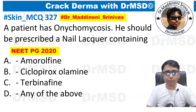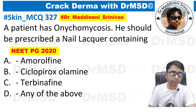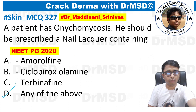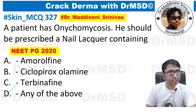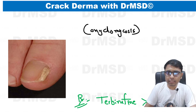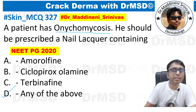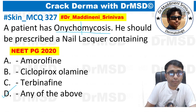This is the MCQ for today. A patient has onychomycosis. He should be prescribed a nail lacquer containing — what do you think is the answer? Is it amorolfine? Is it ciclopirox olamine? Or is it terbinafine? If you have thought any of the above is the answer, you are correct. So let us look briefly at this question. Onychomycosis — 'onycho' means nail and 'mycosis' means fungal infection, so fungal infection of the nail is called onychomycosis.